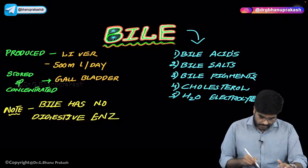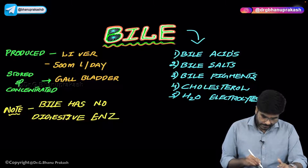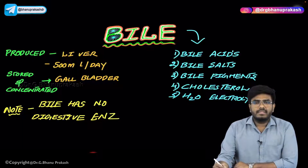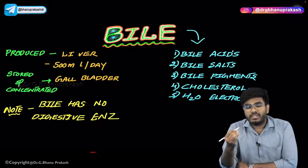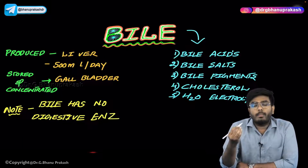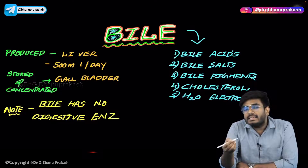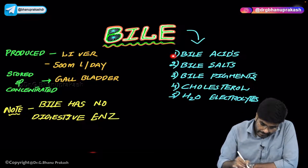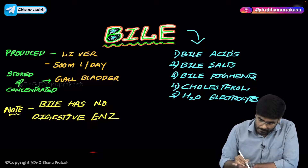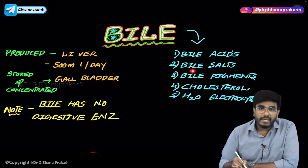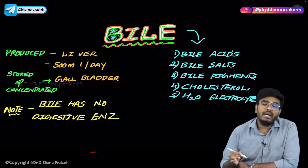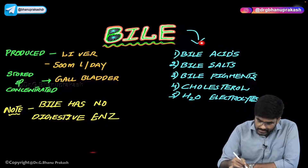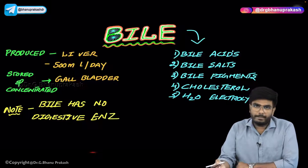Welcome back. In this video, let's discuss about bile. Now, bile is made up of which substances? They can ask you in the exam something like: 'All of the following substances are present in the bile except.' Bile is synthesized in the liver and it consists of bile acids, bile salts, bile pigments, cholesterol, water, and electrolytes. All these things are present inside the bile.